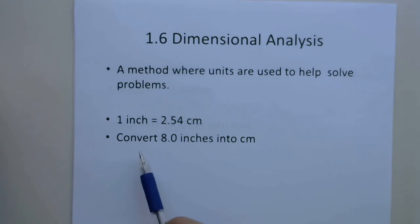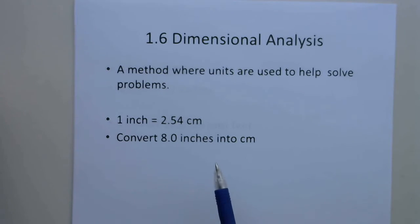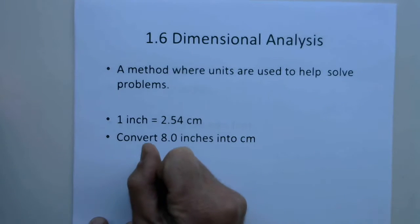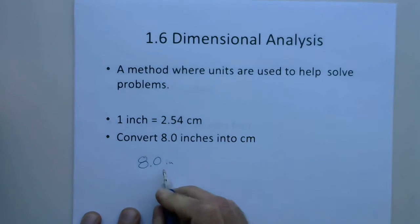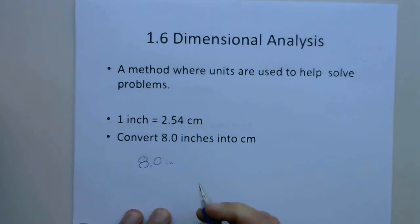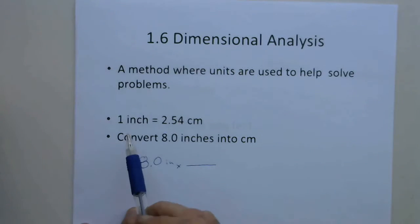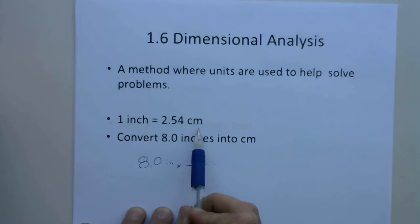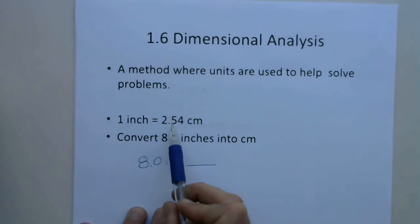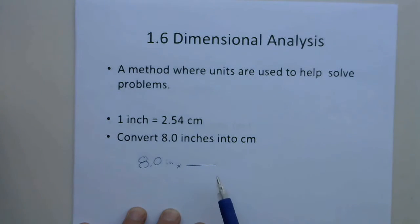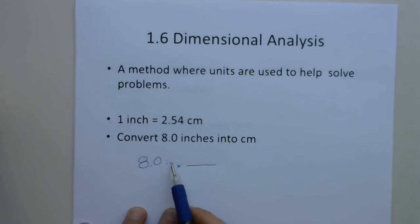Starting with a pretty easy one: we want to convert 8 inches into centimeters. I know a lot of you can do that right away without really thinking about it much, but I want to show you how to set it up using dimensional analysis, and you'll see why as we get into some more challenging problems. So we're going to write down what we're starting with — 8 inches — and I'm going to multiply that by a fraction called a conversion factor. The conversion factor is that 1 inch is equal to 2.54 centimeters.